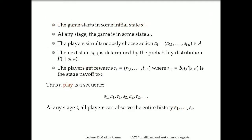The game will start with some initial state, and at any stage the game will be in a particular state S_t. Any history of the play starts with S_1, S_2, and all the way to S_t. In every state, the players play a normal form game—they simultaneously choose some action available at that state. Then the next state is determined by the combination of current actions and the probability transition function. Along with the transition, each player receives a reward distributed to each individual agent.